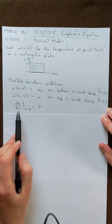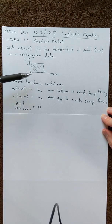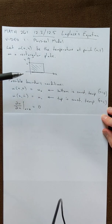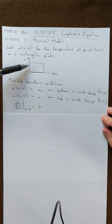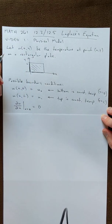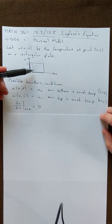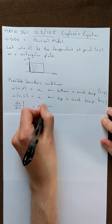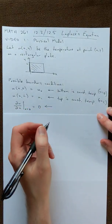This last one, the derivative of u with respect to x, so that's the rate of change in the x direction at x equals zero, that would mean on this left-hand side is equal to zero. Which means that on the left-hand side the temperature is not moving left to right. So I guess that means that the left side is insulated.